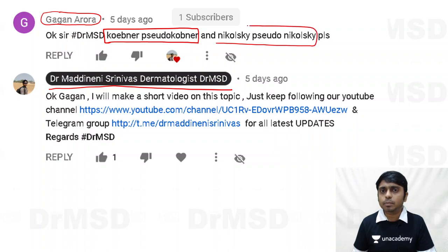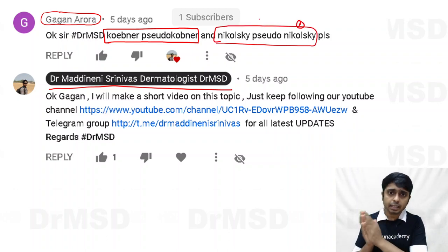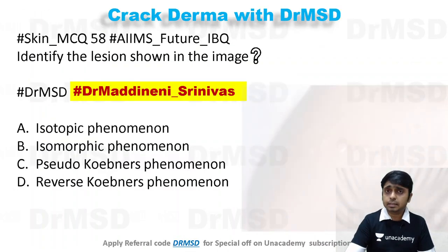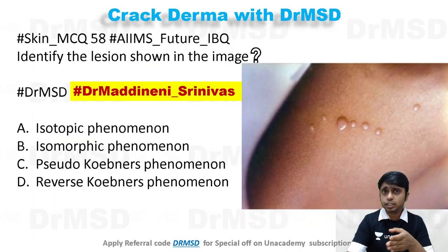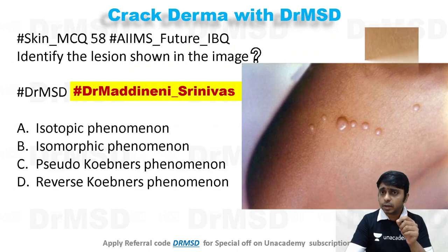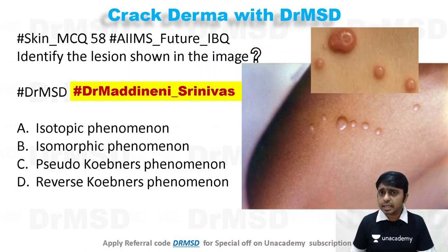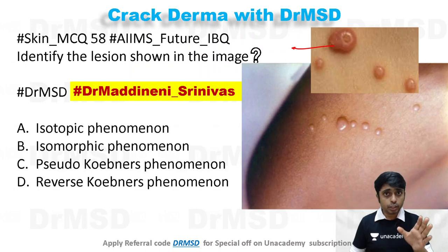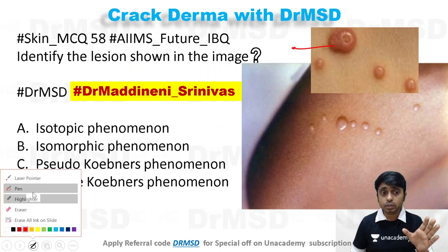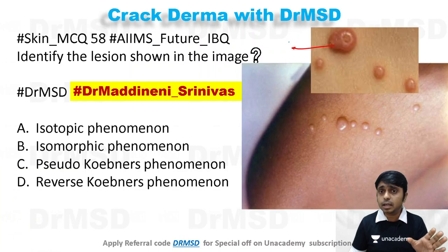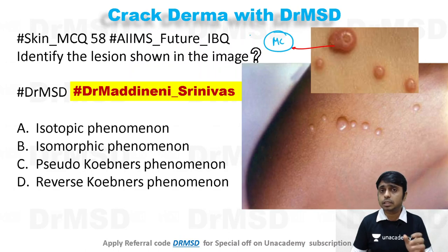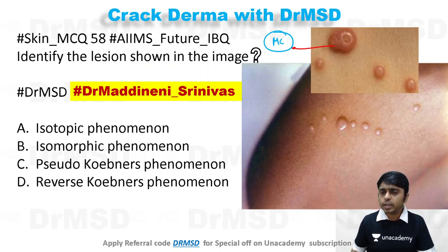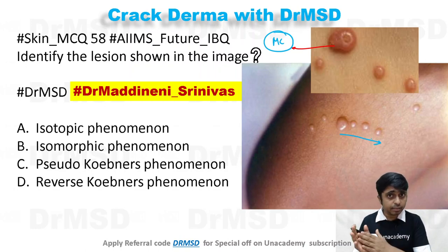Nikolsky and pseudo-Nikolsky signs and phenomena will also be explained in another video. So this is today's question. This is the image and this is one more image which is a zoomed-in image. With this image, you should be in a position to diagnose this condition as molluscum contagiosum. Because you are able to see pearly white papules with central umbilication. This is the disease — molluscum contagiosum — and the lesions are arranged in a linear fashion.